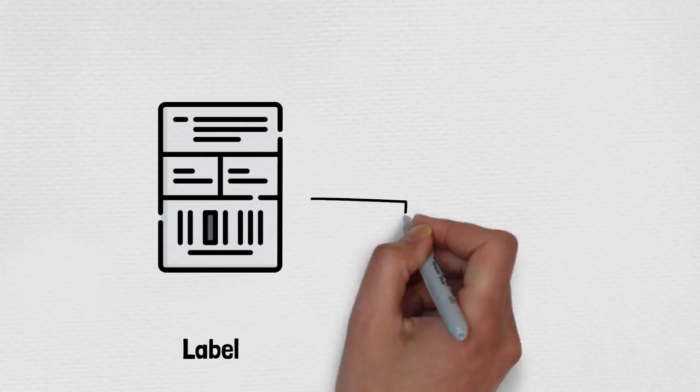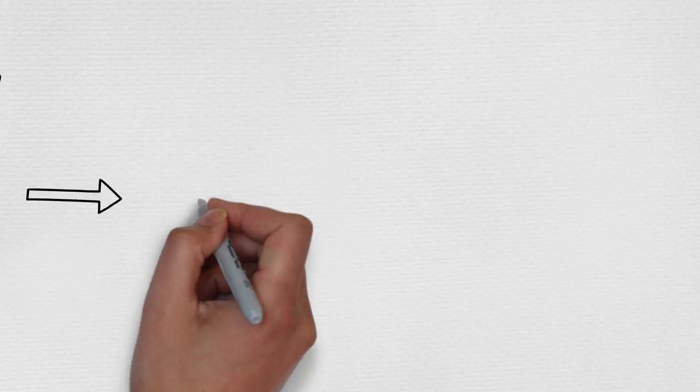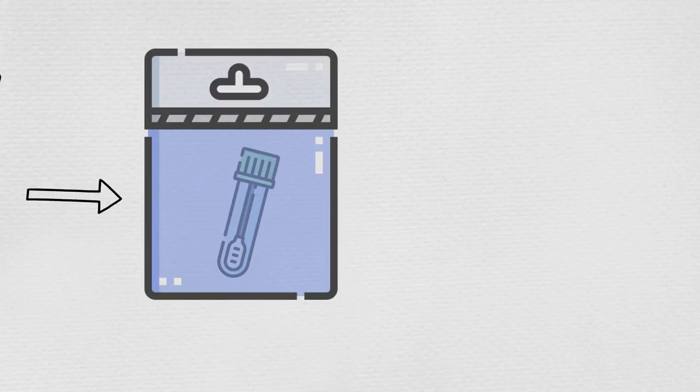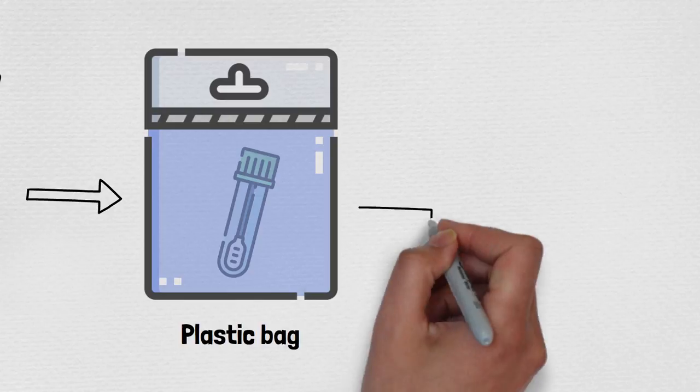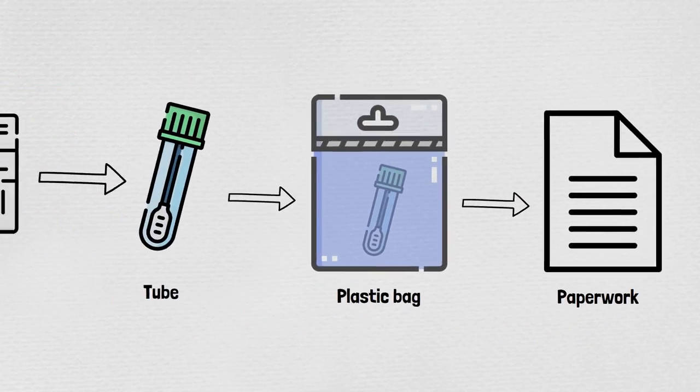Put the label with your name, date of birth, and other information on the tube. If more than one person is going to be doing the test, make sure your label is put on your tube. Put the tube inside the bag and seal it in. Put the paper with your name on it in the outside pocket.